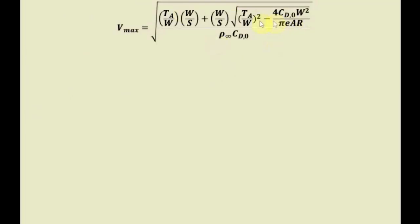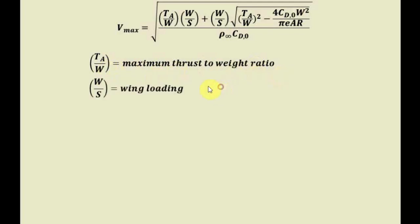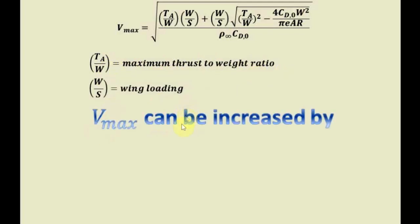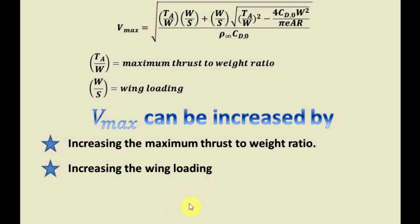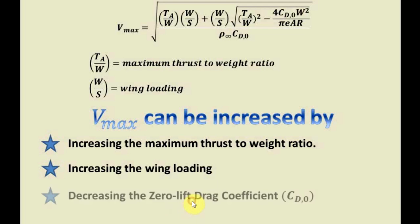From this equation, we draw three conclusions. The maximum velocity of the airplane can be increased in three ways: you can increase the maximum thrust-to-weight ratio, you can increase the wing loading of the aircraft, or you can decrease the zero-lift drag coefficient, since it has an inverse relationship with maximum velocity — decreasing it will increase the maximum velocity of the airplane.